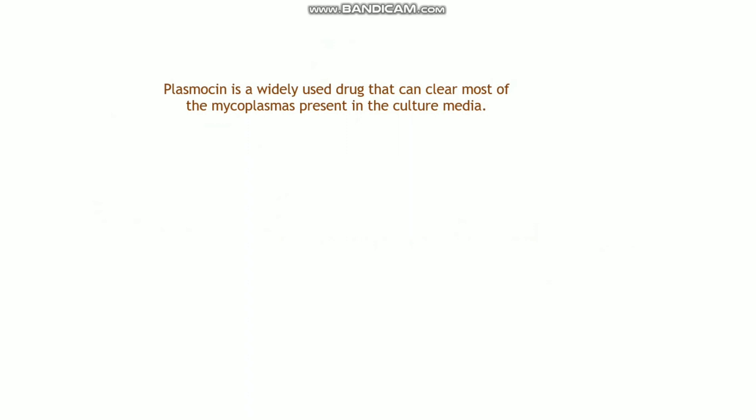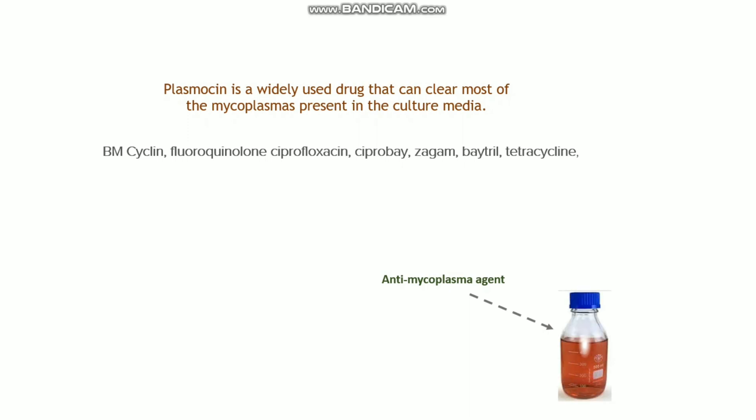There are also commercial agents available in the market, such as Plasmocine. Plasmocine is a widely used drug that clears most of the mycoplasma present in cell culture media. It is available from different manufacturers so you can use it directly. There are also other anti-mycoplasma agents available. When two different antibiotics are used at the same time, they have a synergistic effect. One important note: do not add anti-mycoplasma agents directly into the cell culture media bottle, as it may degrade and reduce the potency of the agent. You should add it directly to the cell culture media during the cell culture process.